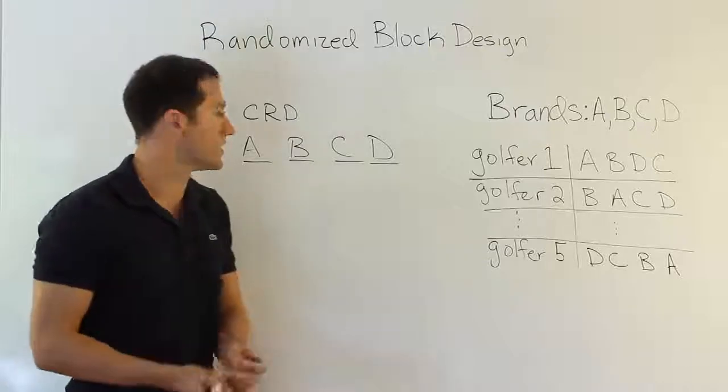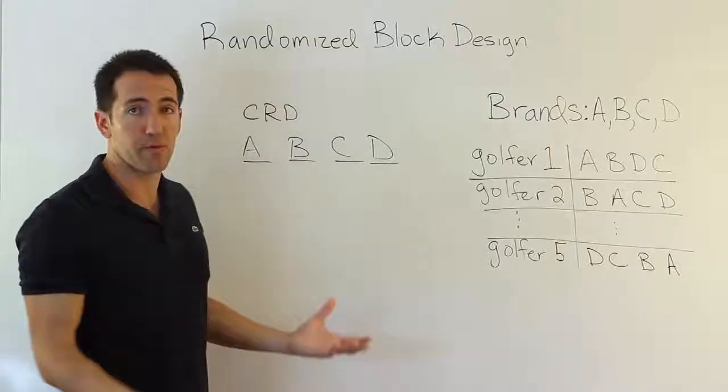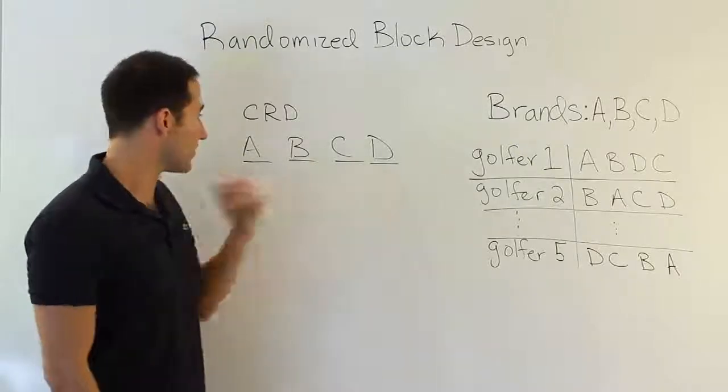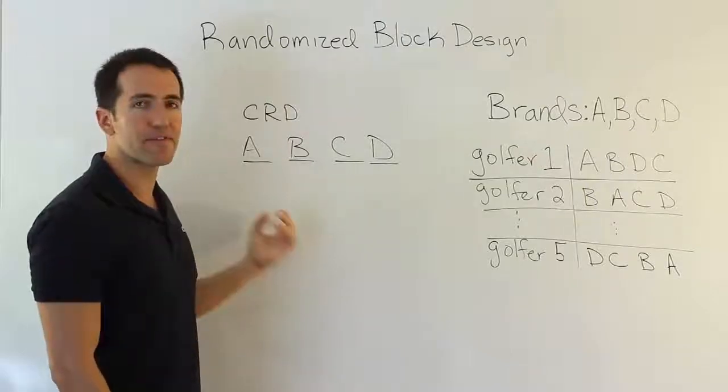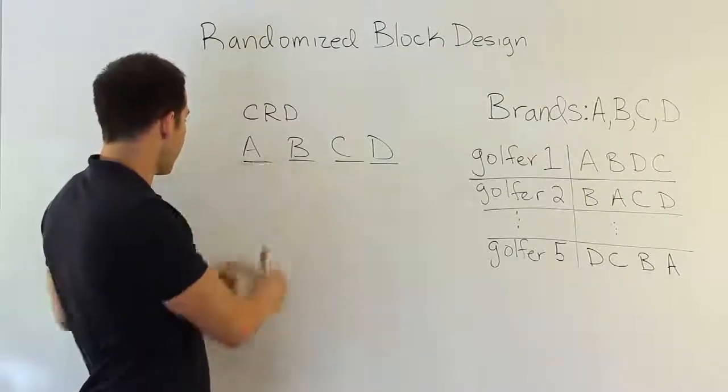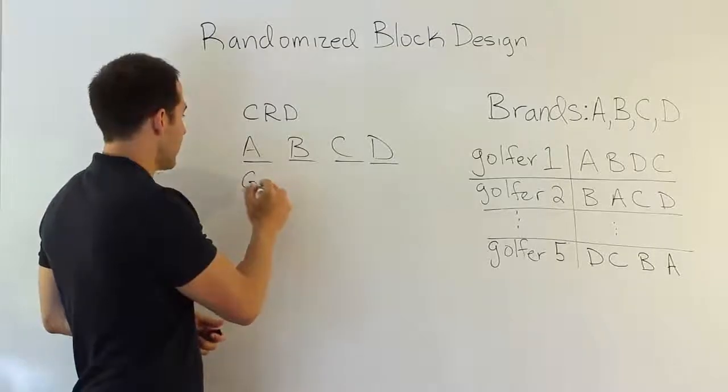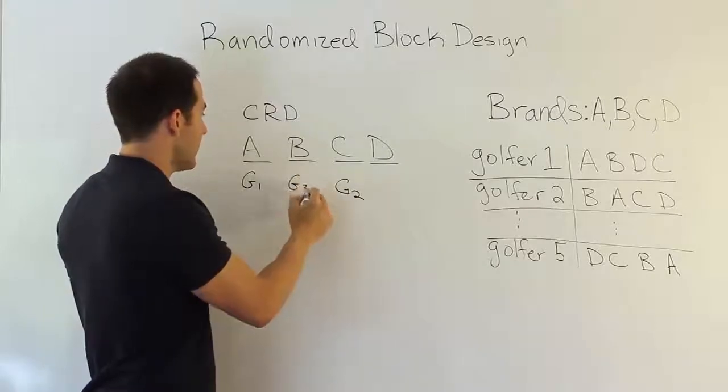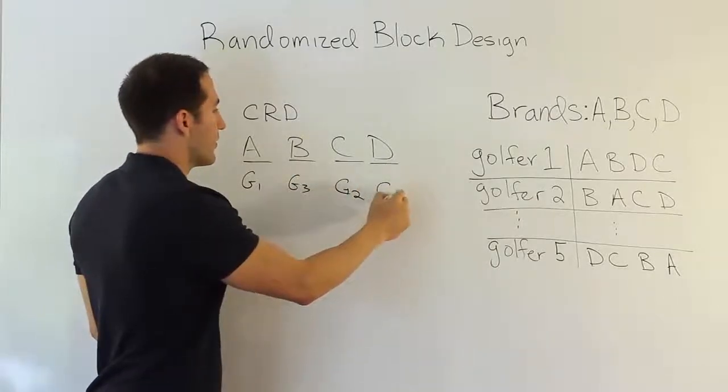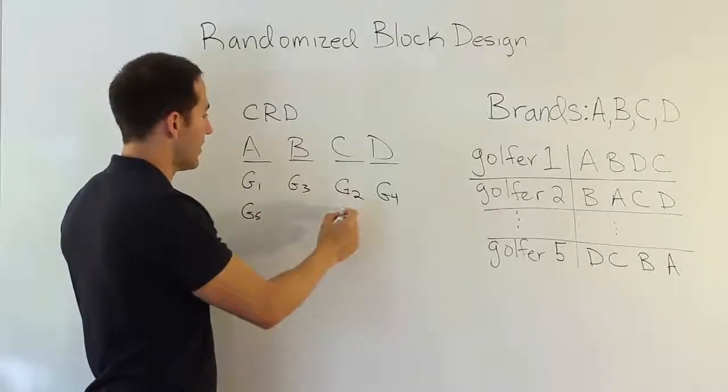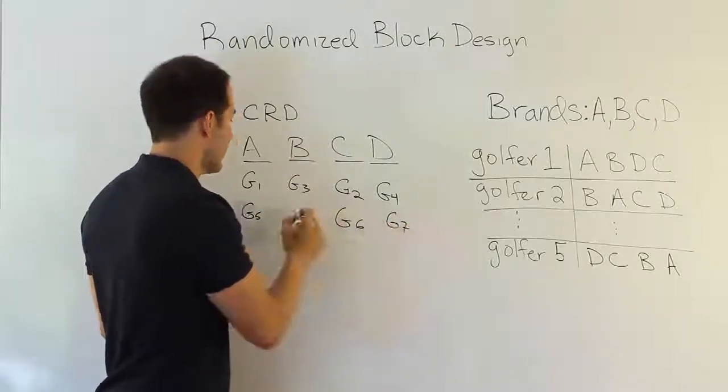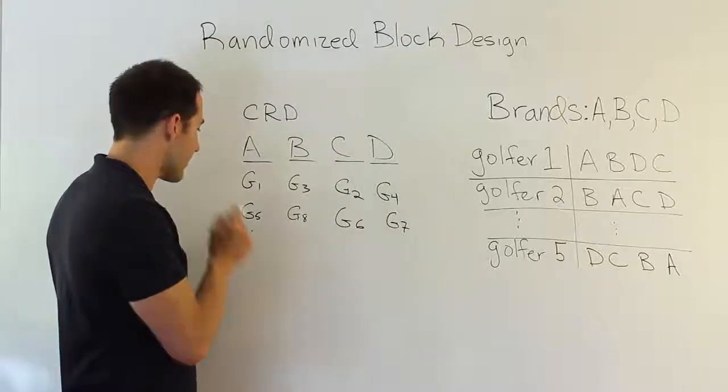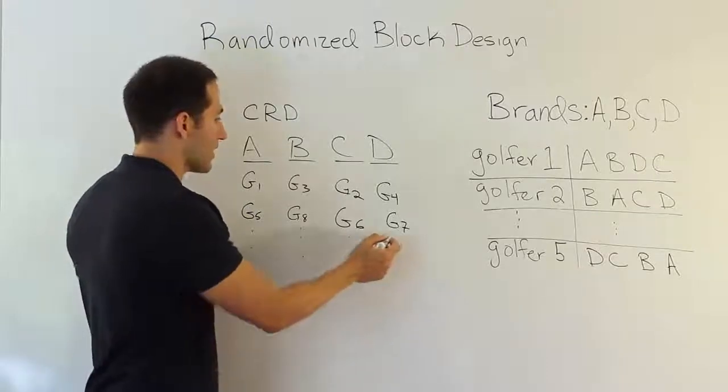We'll get 40 golfers or 50 golfers and randomly apply them to each group. Let's say for simple numbers we have 20 golfers and we're going to decide that we're going to put five golfers. We might have golfer one here, apply golfer two here, golfer three here, golfer four here, golfer five, golfer six, golfer seven, golfer eight, so on and so forth.